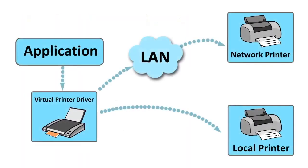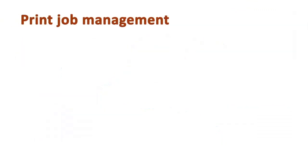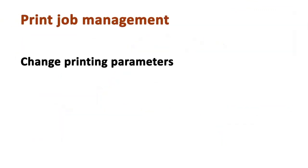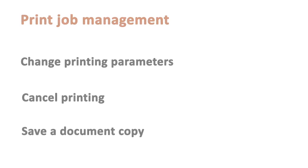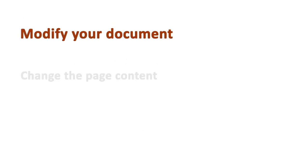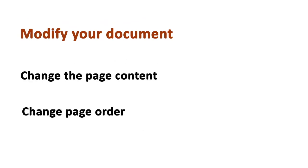Our product supports print job redirection to any available local or network printers. Print job management allows you to control the print process — who prints, what is printed. You can change printing parameters, cancel printing, or save a document copy. You can also modify your document, change the page content or page order, and add, delete, or reorder pages.